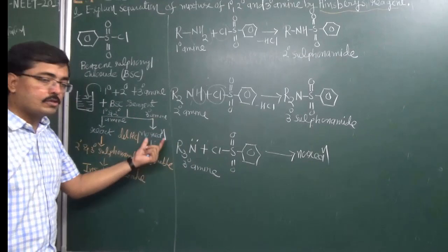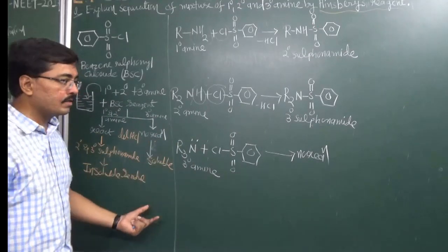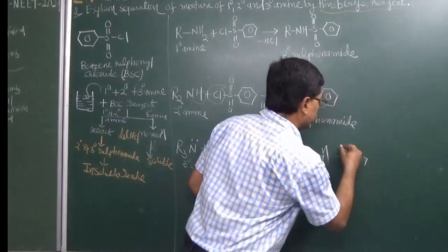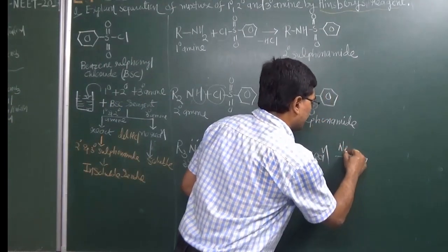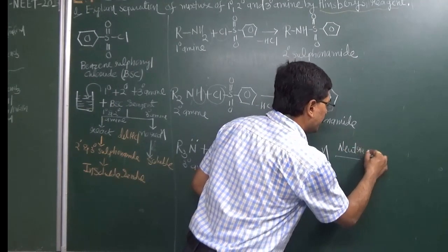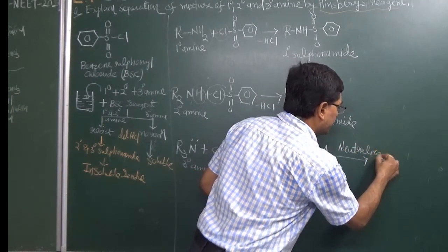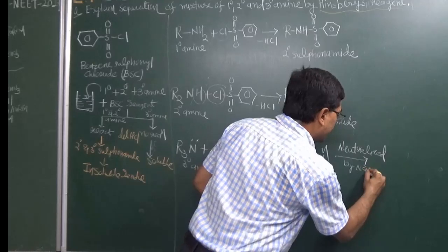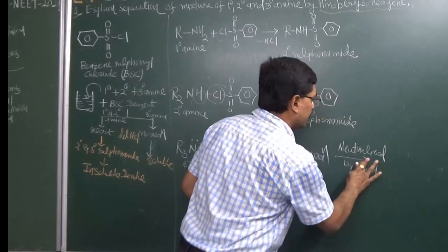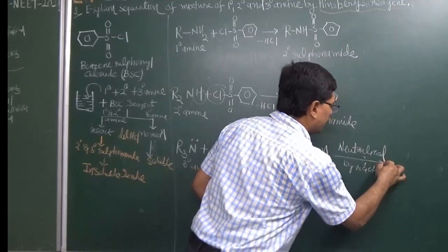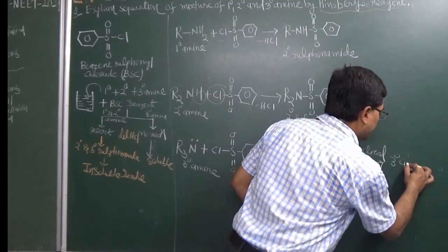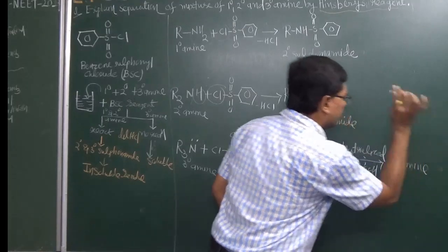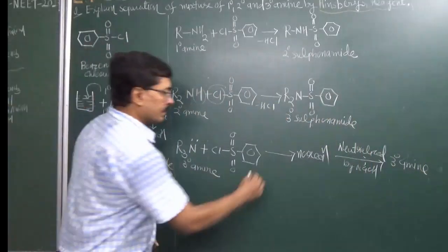Whatever soluble mass is obtained is neutralized by NaOH. When neutralized by NaOH, this mixture gives us the tertiary amine. So from the mixture we have now obtained the tertiary amine.